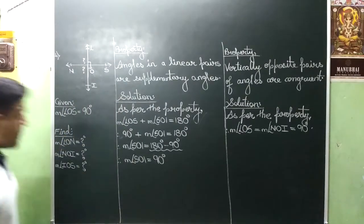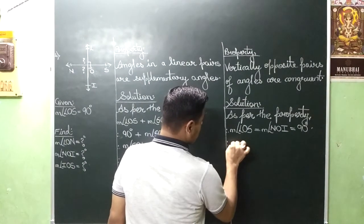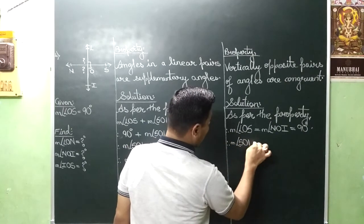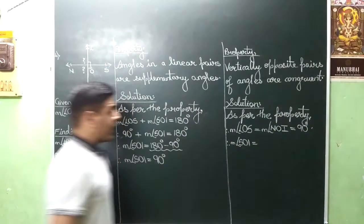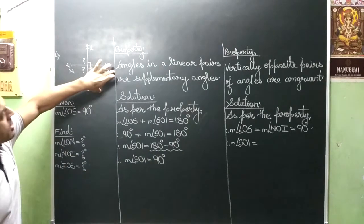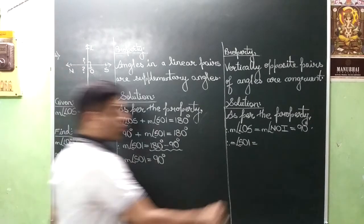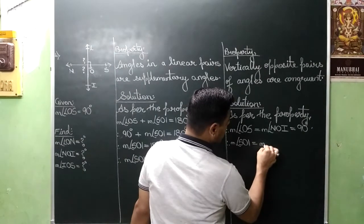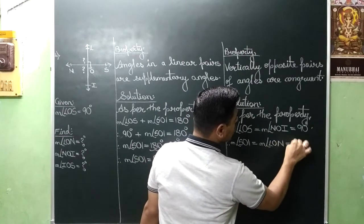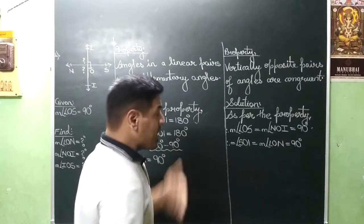Next peta hamara finally kya tha. SOI. So we will write. Measure angle SOI is equal to SOI. Iska opposite ho jaega LON. So we will write here. Measure angle LON is equal to 90 degree.